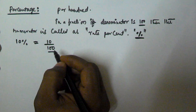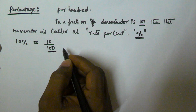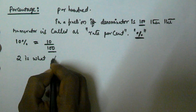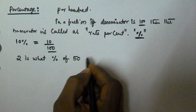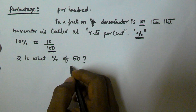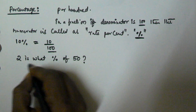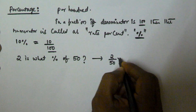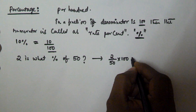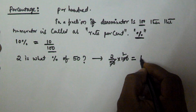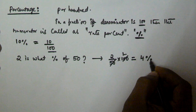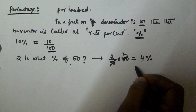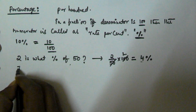So we will see some examples. For example, 2 is what percentage of 50? To calculate this, we do 2 divided by 50, multiplied by 100, which gives us 4 percent. So 2 is 4 percentage of 50.